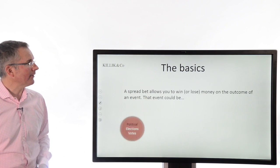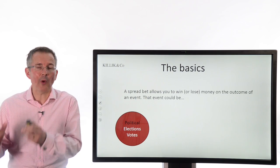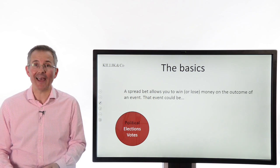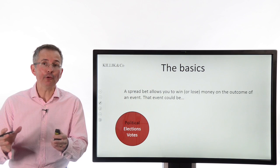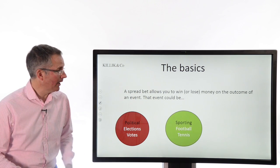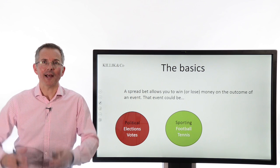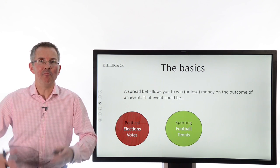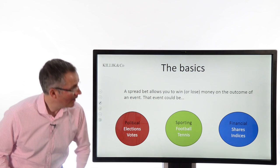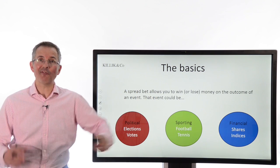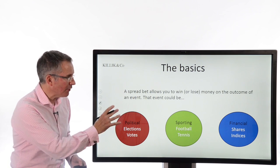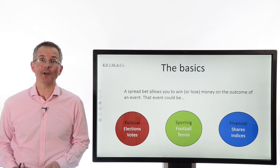The basics: a spread bet allows you to win or lose money on the outcome of an event, and that event can be on almost anything. I've loosely grouped them into political — elections and votes, you've probably heard enough about those this week — sporting, so football fans, tennis fans, and cricket fans can bet on the outcome of games, matches and so on. And on the financial side, bets on shares, indices and so on. I'm going to start there, mention sporting, and probably leave politics to one side for now.